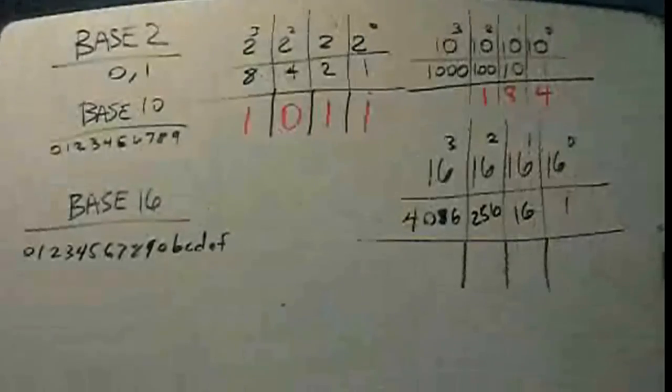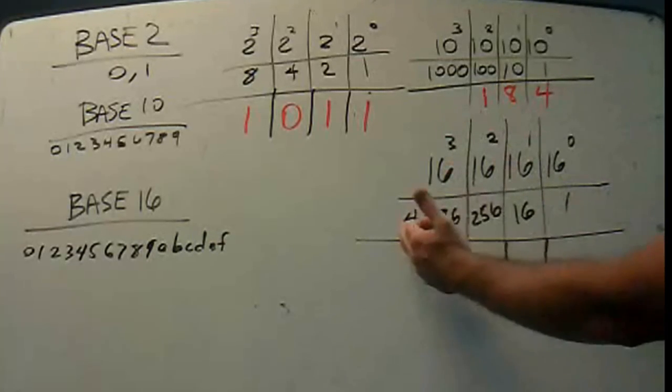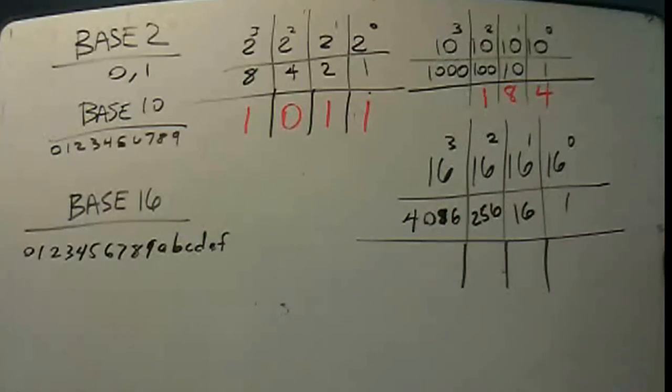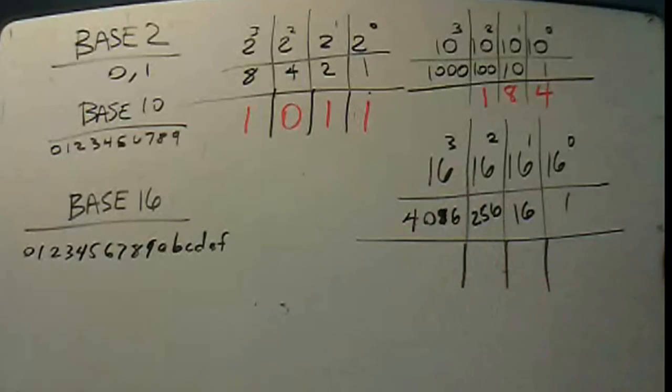But aside from that, it works just the same as a decimal or binary system. We have place values. So we have 16 to the 0 power is the 1's place. 16 to the 1 is the 16's place. 16 to the 2 is 16 times 16, or the 256 place. And 16 to the 3rd power is 4,096, 16 times 16 times 16.